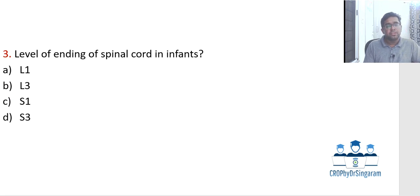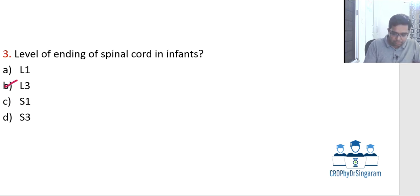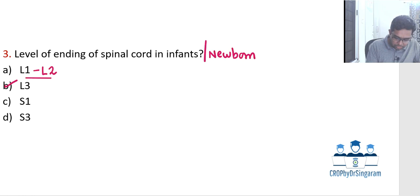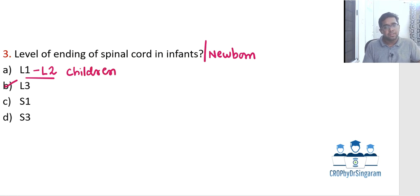The next question: the level of ending of the spinal cord in infants is L3. If the question asks about a newborn, the answer is also L3. Only after infancy — in older children — does it end at the level of L1 to L2. These are straightforward fact-based questions you should know.